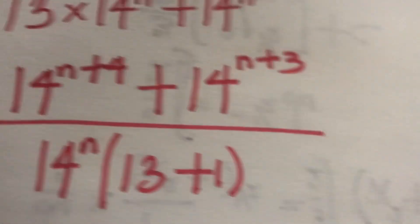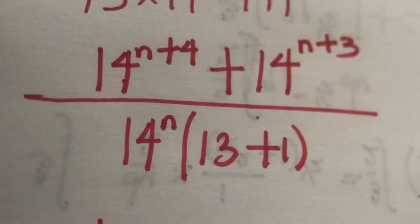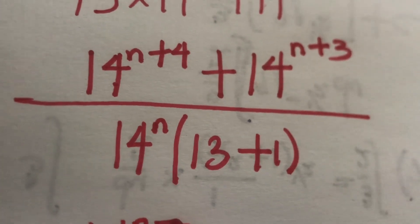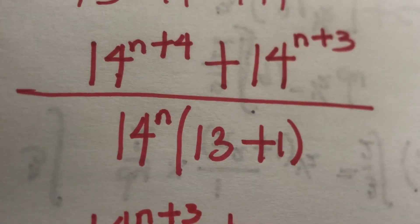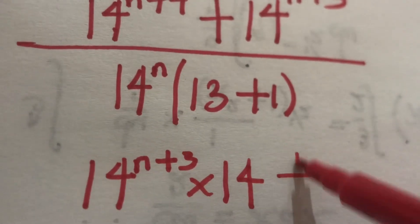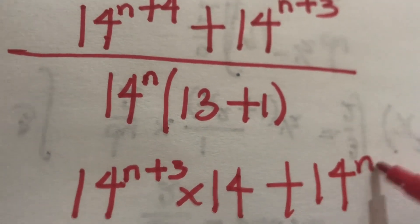So we can equate that for this. We have 14 to the power n plus 3 times 14 times 14 plus 14 to the power n plus 3.